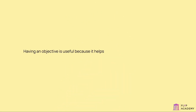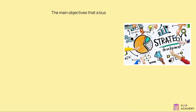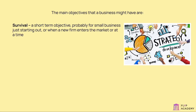Having an objective is useful because it helps staff to focus on shared aims. A business could instruct its staff to work towards increasing sales by 10% by the end of the year. The main objectives that a business might have include survival — a short-term objective, probably for small businesses just starting out, when a new firm enters the market, or at a time of crisis.